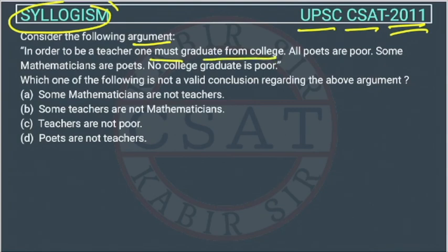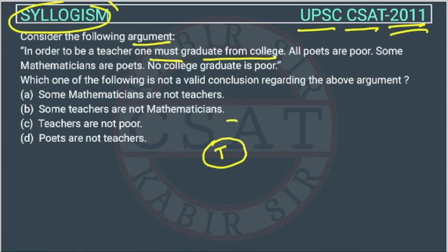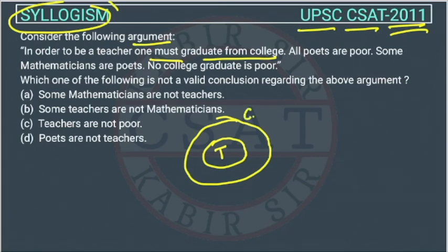We will draw the Venn diagram. This Venn diagram is for teacher. In order to be a teacher, one must graduate from college. So the college graduate's Venn diagram will cover the teacher. These are college graduates.